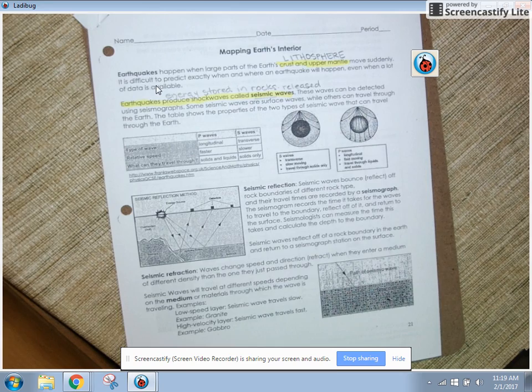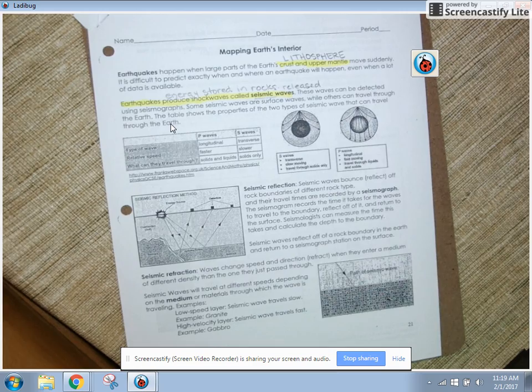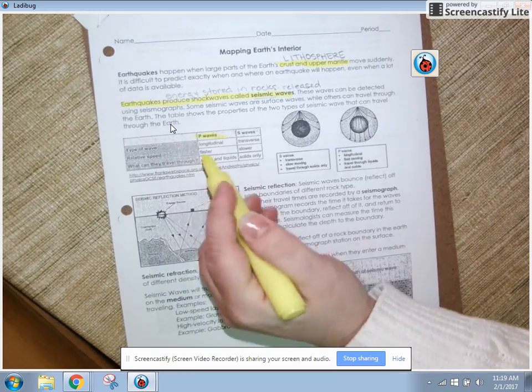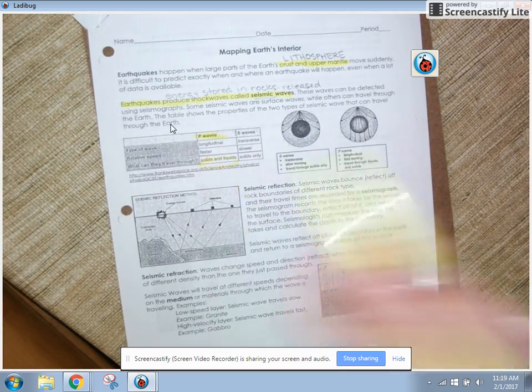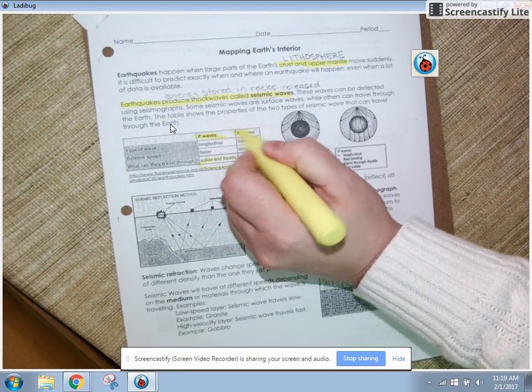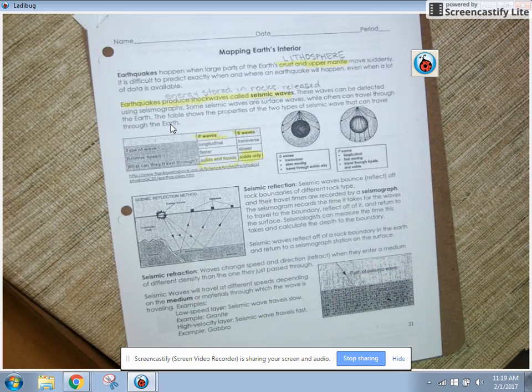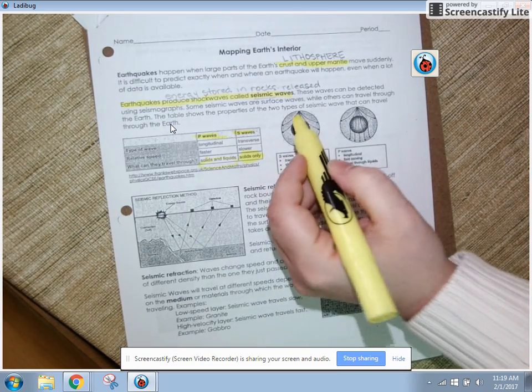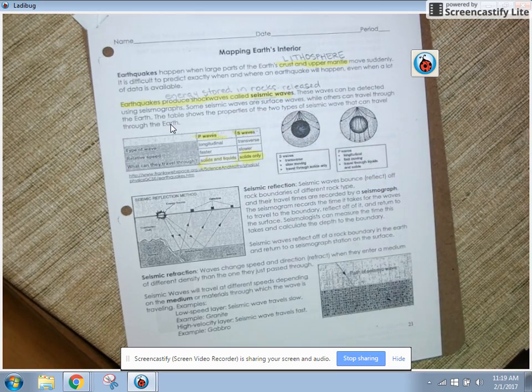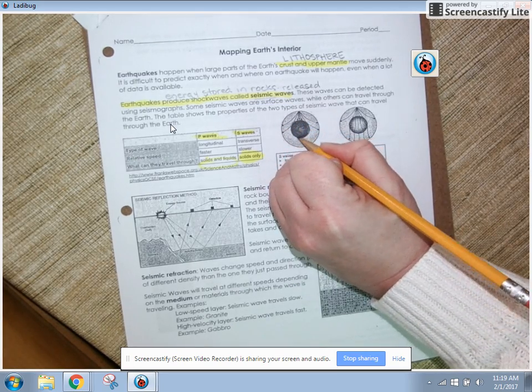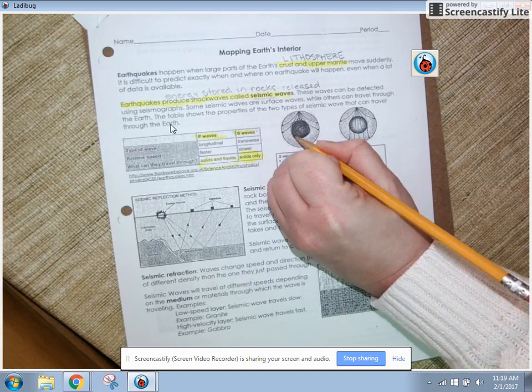These waves can be detected using seismographs. Some seismic waves are surface waves while others can travel through the earth. The table shows the properties of the two types of seismic waves that can travel through Earth. So let's look at the table. We've got P waves - we can see that they're the fastest and can travel through solids and liquids. I've got S waves - they're slower and can only travel through solids. And then over here, I have a picture of S waves and a diagram of the earth, and you can see that they are stopping right here. They can't seem to be able to go through that layer.